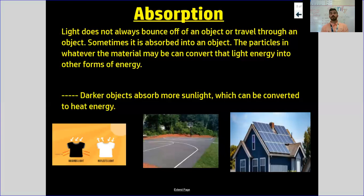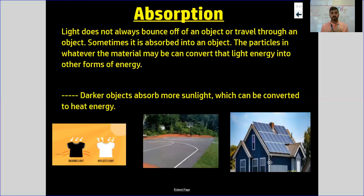Another way that light can be absorbed and converted into energy — you may not see it a whole lot around Greenville or your neighborhood — but if you look at this picture, there's something called solar panels that they have on roofs. Those solar panels take in that light energy and convert it to electrical energy to help power your house, power electrical outlets, anything you have in your home. A lot of people try to do this to help the environment. So when light is absorbed, sometimes it can be converted to a different form of energy, like using a solar panel.